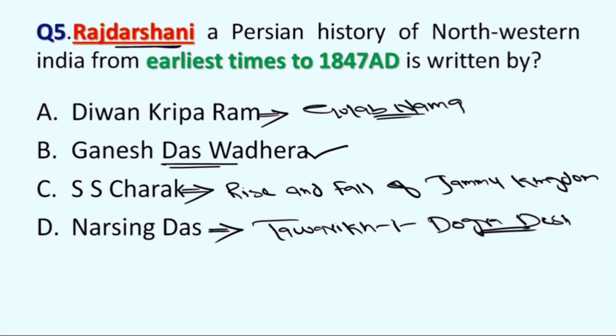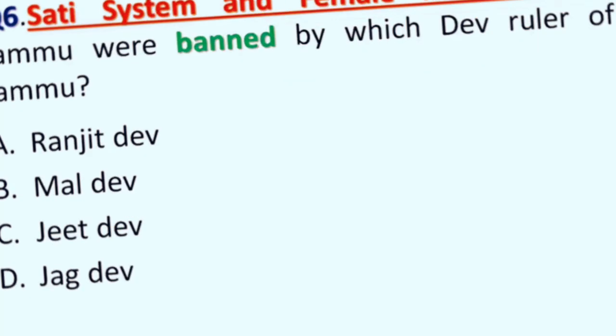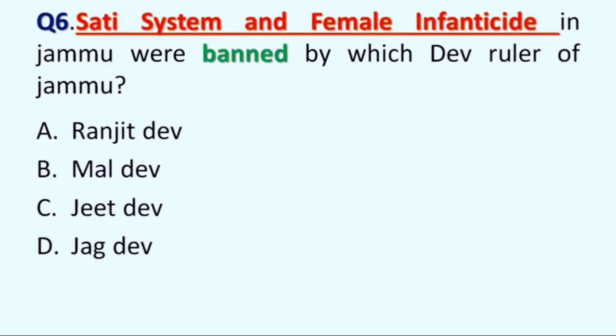Next question is: Shetty system and female infanticide in Jammu was banned by which Dev ruler of Jammu? Option A: Ranjit Dev, B: Maldiv, C: Jid Dev, and D: Jagdev. Correct answer is Option A, Ranjit Dev. He banned Shetty system and female infanticide in Jammu. And in Kashmir, Shetty system was banned by Sultan Sikandar.